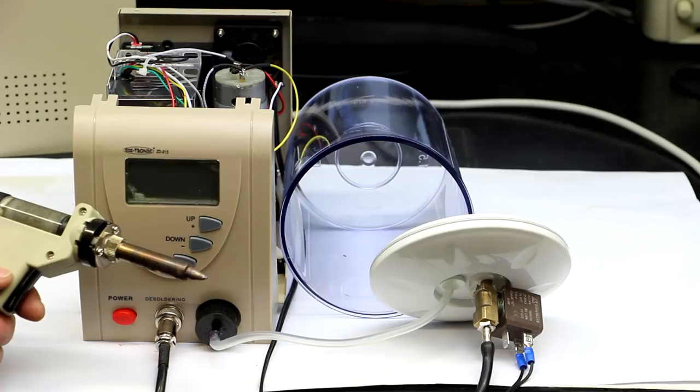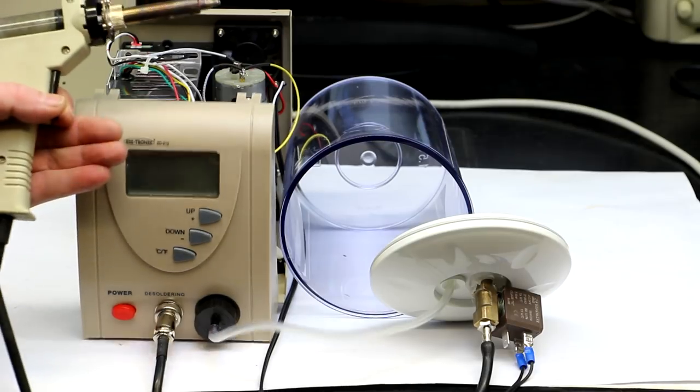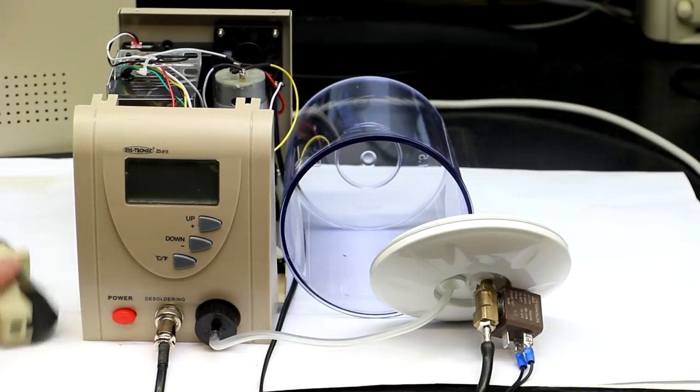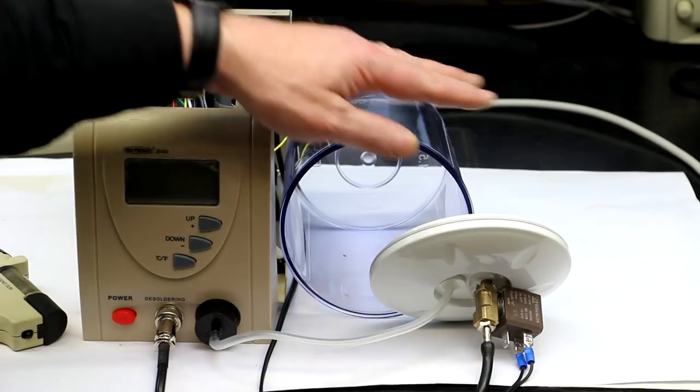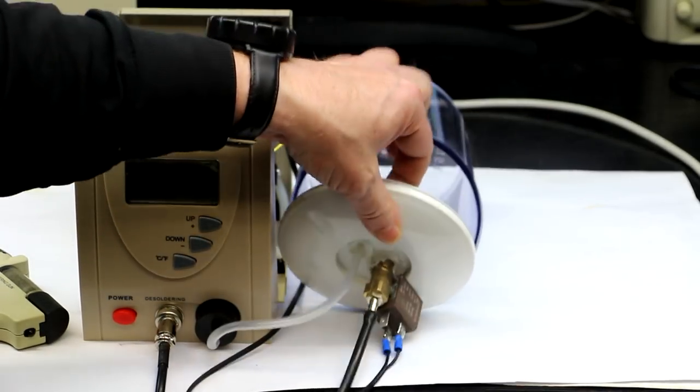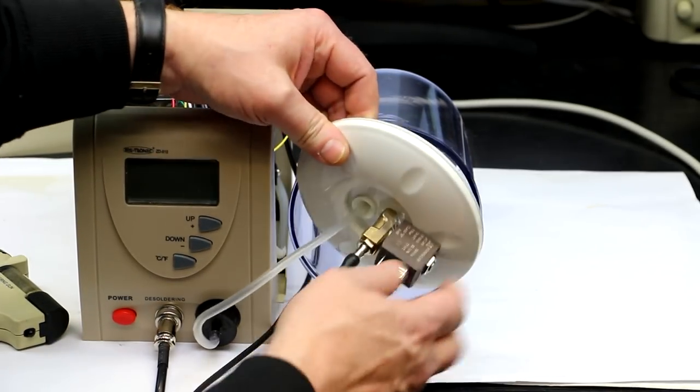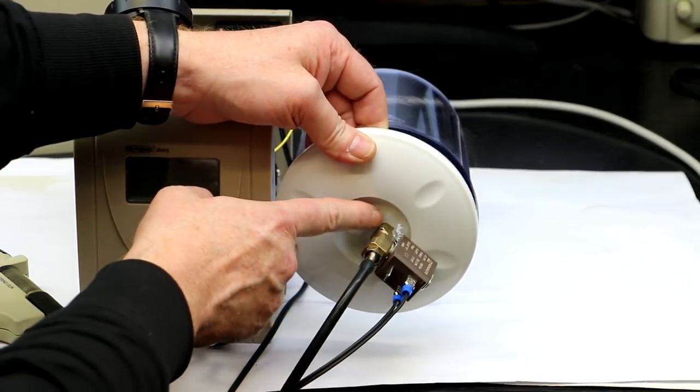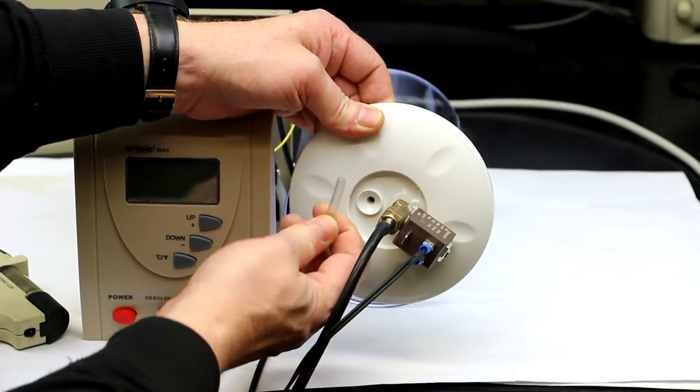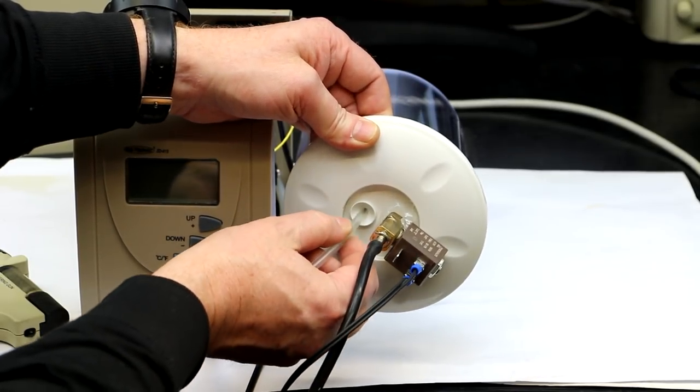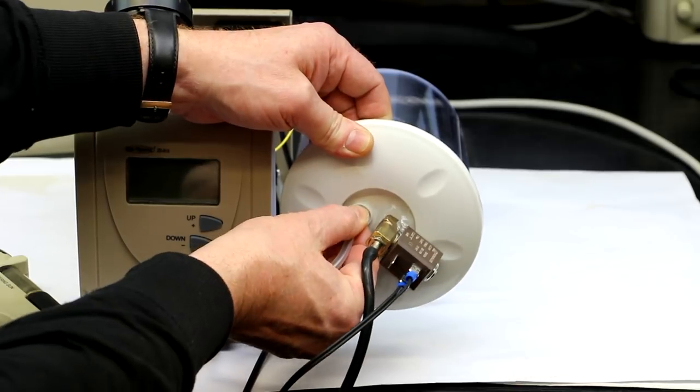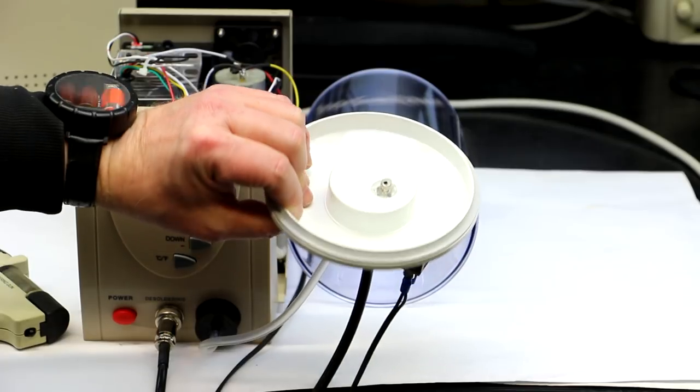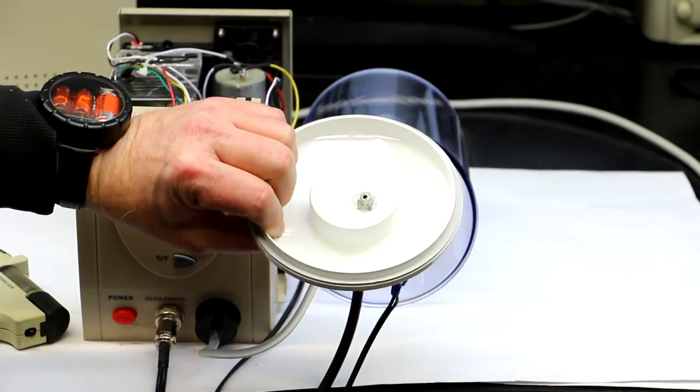So that was a short mod on this cheap vacuum desolder station and I'm quite happy with it. And if I can do it with my two left hands, then anybody else can do it. You only need these two parts and I've glued this with some hot glue here. And this little hose here just by chance fitted directly into this hole. And here also some little hot glue. And that was all. So it's quite easy to do by yourself.